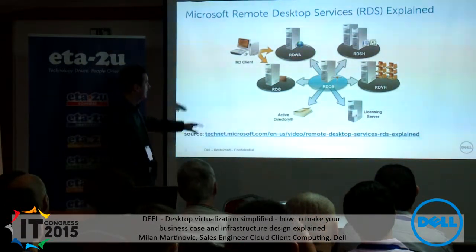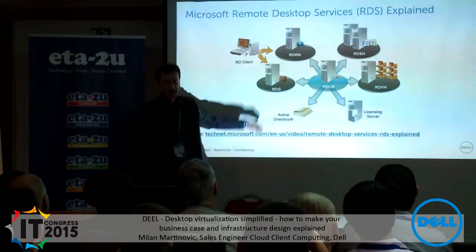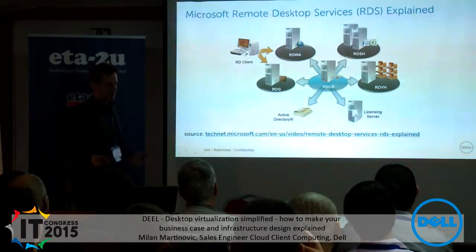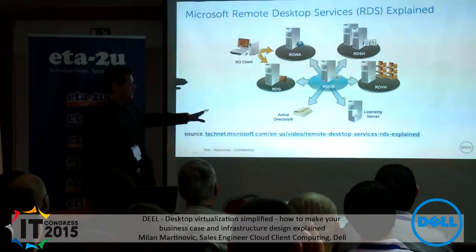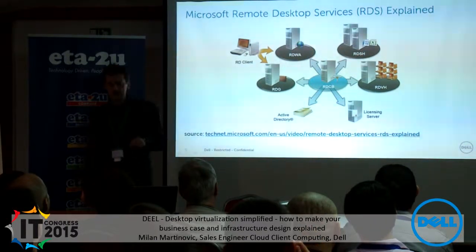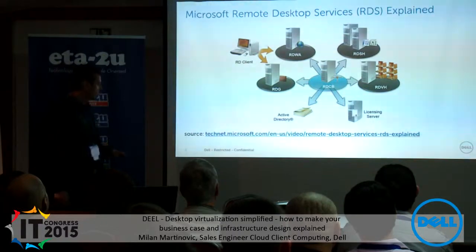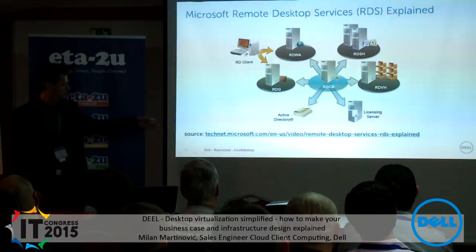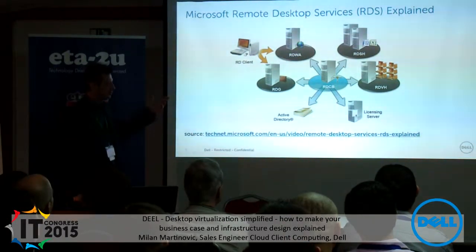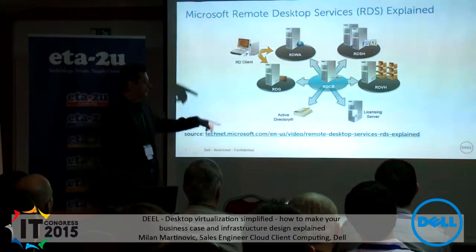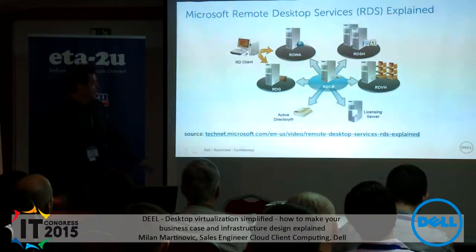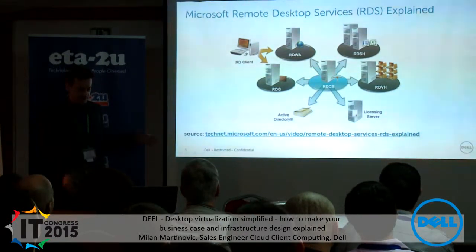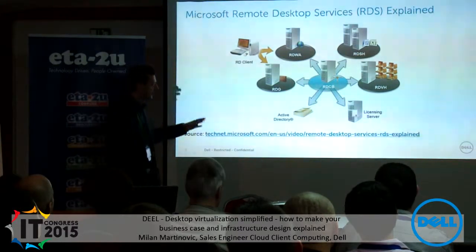I wanted to illustrate how a typical desktop virtualization project infrastructure needs to look. Everything shown is in the data center except the client, which could be an access device, thin client, zero PC, mobile device — whatever. I took this picture from the Microsoft website on Remote Desktop Services — it's probably one of the first links that comes up if you search for it — and there is a lot of text explaining what every component does.